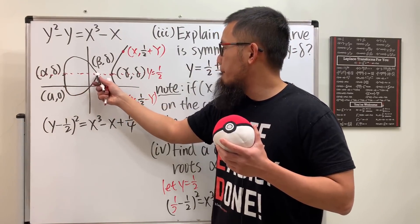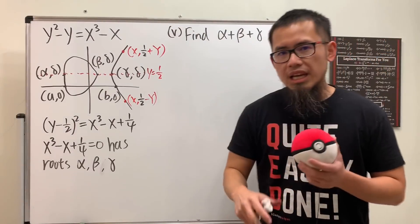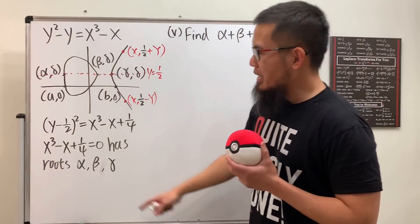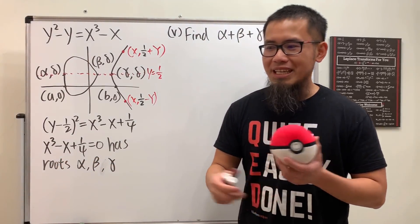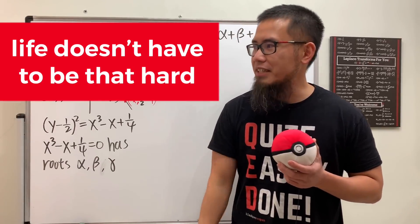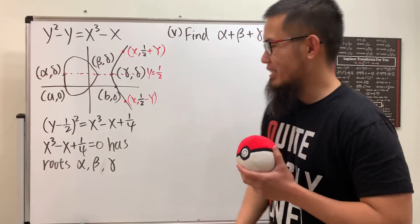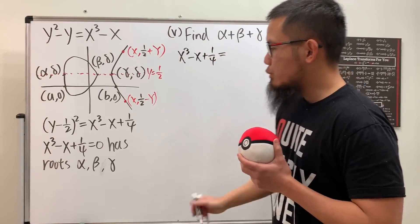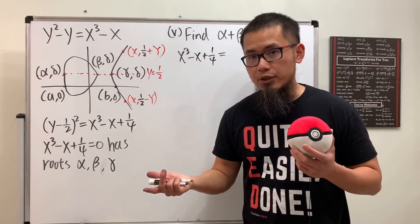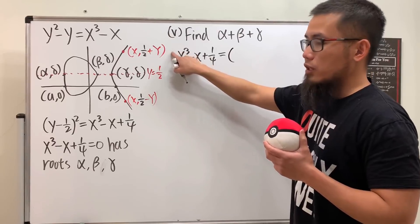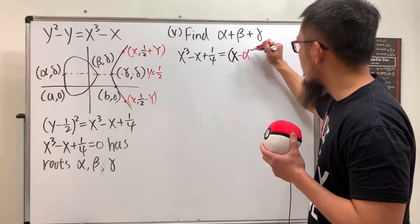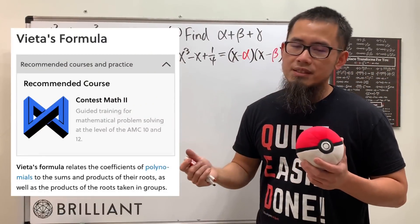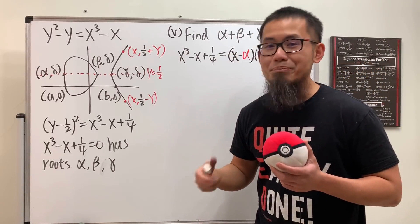For the next part we calculate α + β + γ. We could use the cubic formula, but there's an easier way. Since x³ - x + 1/4 has roots α, β, γ, we can write it in factored form as (x - α)(x - β)(x - γ). By Vieta's formulas, the sum of roots equals the negative of the coefficient of x².